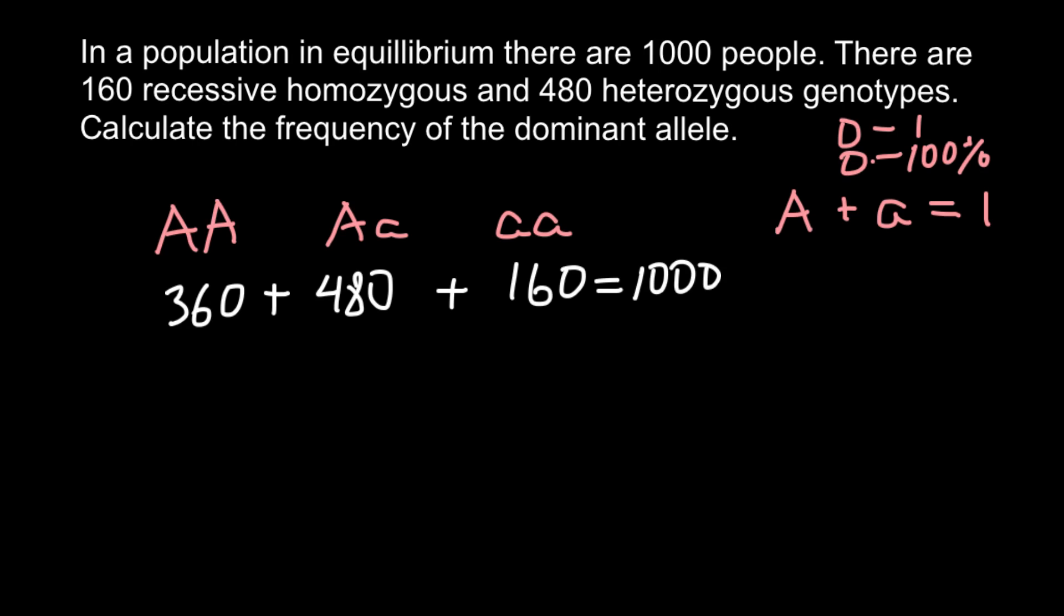As you see we have two dominant alleles here. So each person here would have two dominant alleles. Here half of the alleles would be dominant and half would be recessive. So basically we have to add half of this number to this pile and half of this number to this pile.